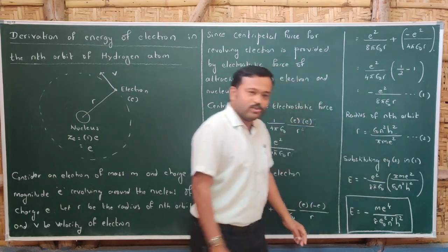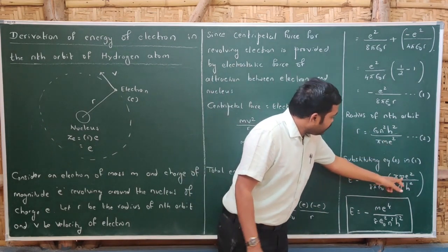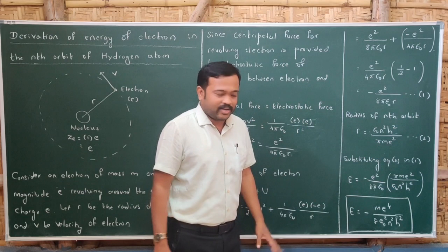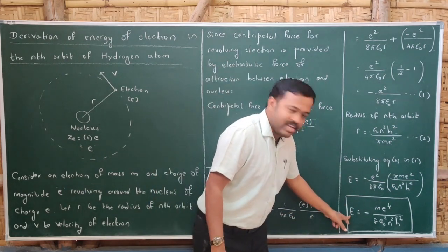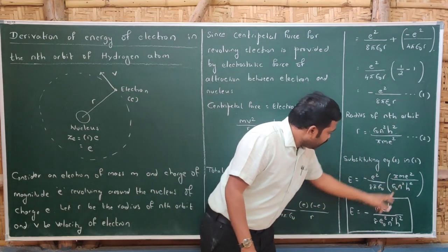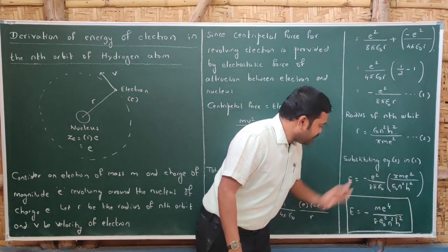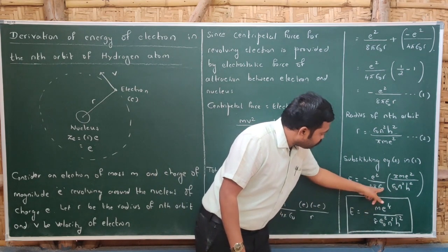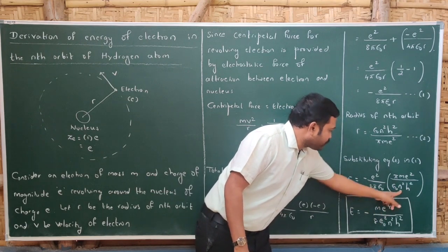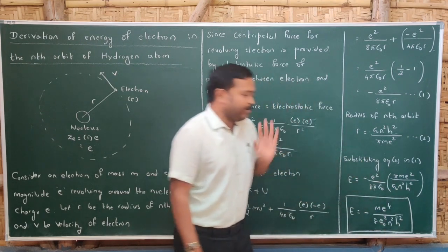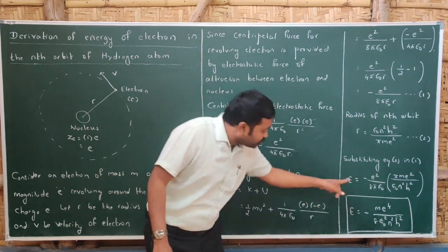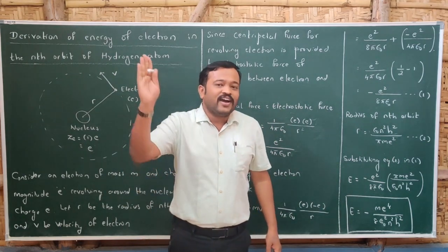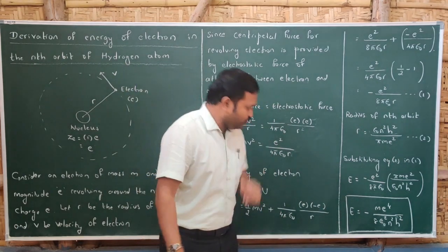Substituting the reciprocal of r, which is πme²/(ε₀n²h²), into the expression, and simplifying — π and h² cancel — we arrive at the expression for the energy of the nth orbit of the hydrogen atom: E_n = -me⁴/(8ε₀²n²h²). Here m, e, ε₀, and h are all constants.